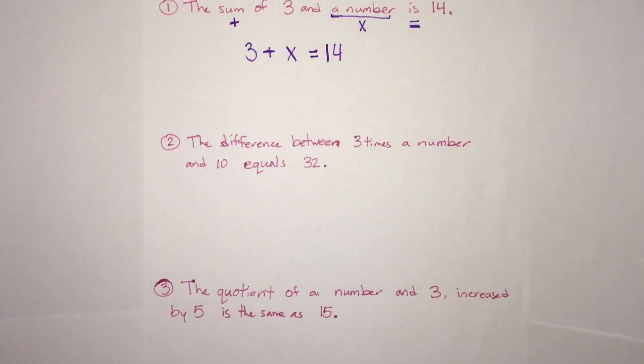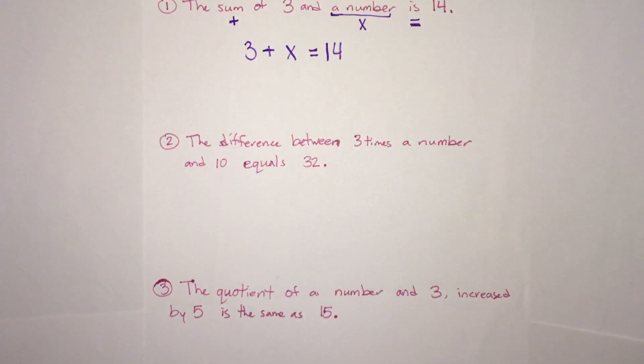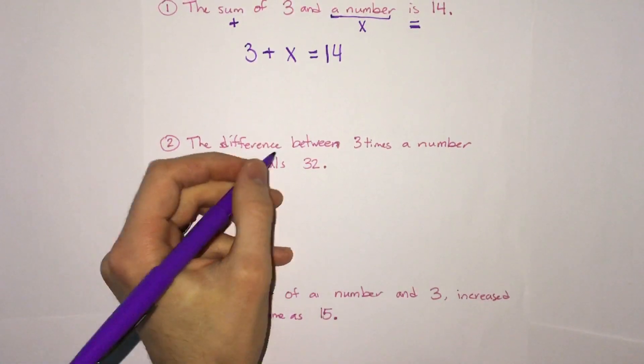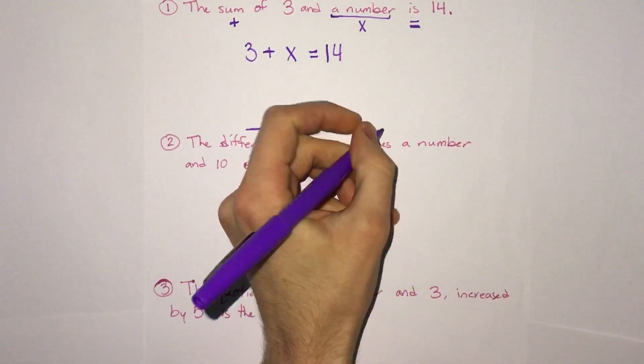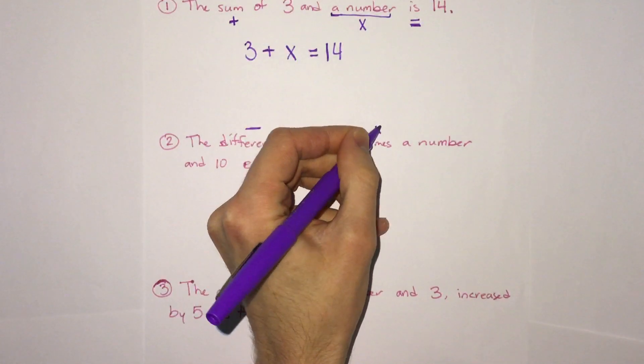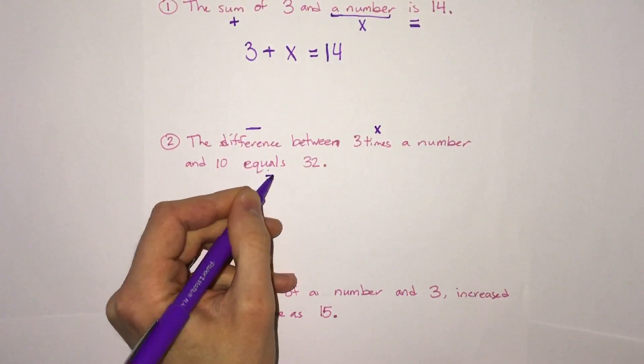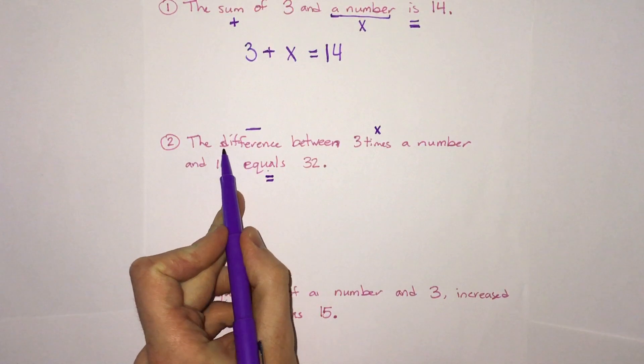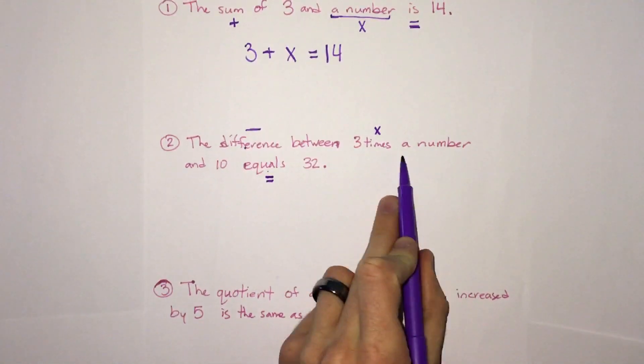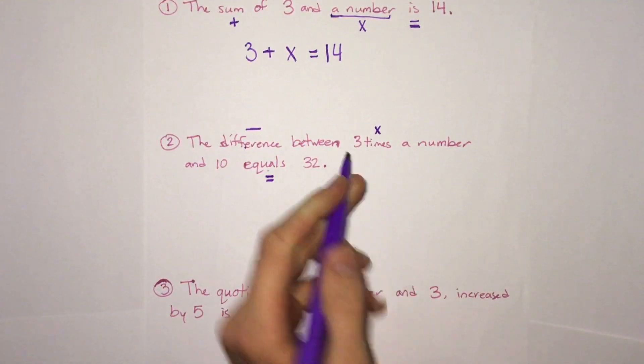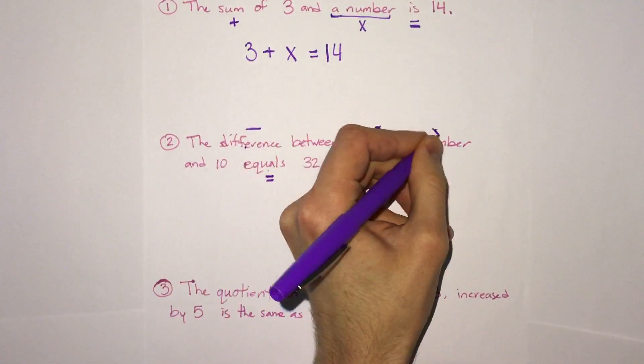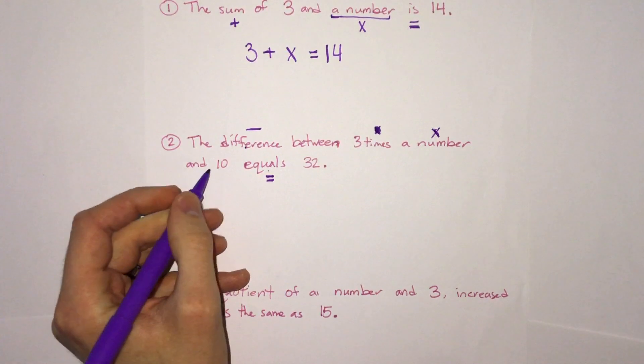Going on to the second one, we see the difference. Now if we look back, difference was subtraction. The difference between three times the number and 10 equals 32. So we see times, we see the multiplication and equals. Let's start with the first part. It says the difference between what? Well, one thing it says is between three times the number. So that's saying three times, and let's do dots, that's confusing, three times x and 10.